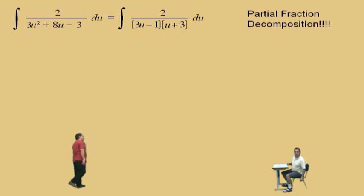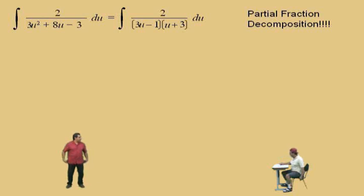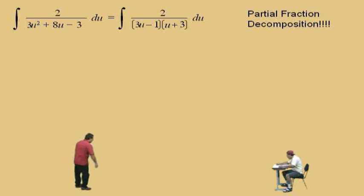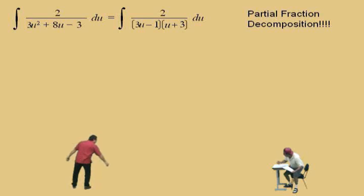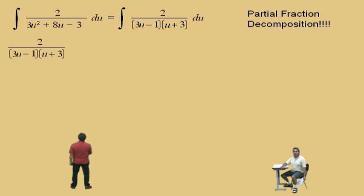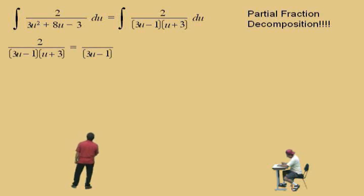Partial fraction decomposition. That's right. So here we go. We've got a long way to go. So let's take a quick break here. Okay, we're ready. Partial fraction decomposition — we're going to take our rational function and decompose it into fractions with denominators of 3u minus 1 and u plus 3.